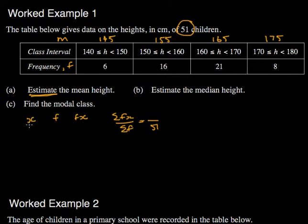So just to give you an idea about how to start this table off. The first x value was 145, and the frequency was 6. Then we had 155, and the frequency was 16, and so on.